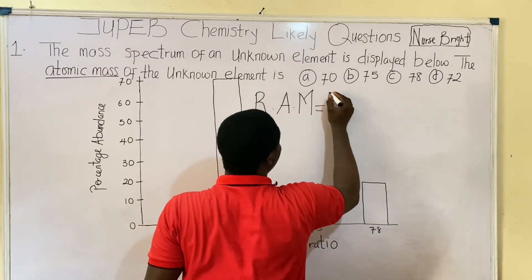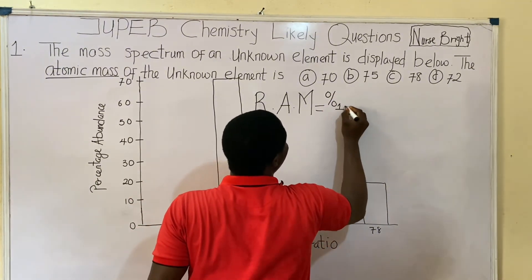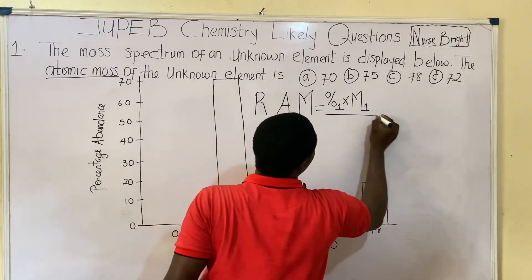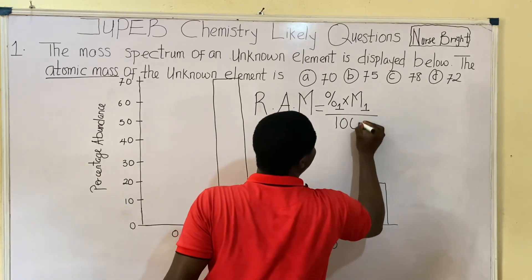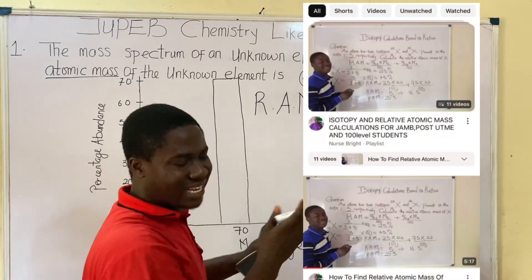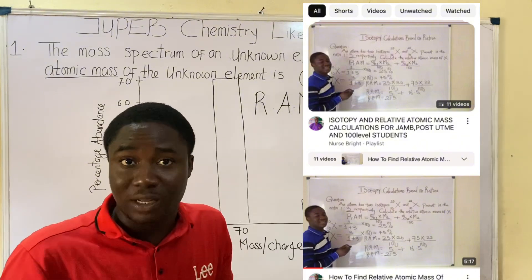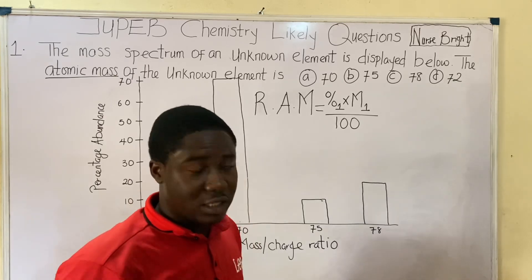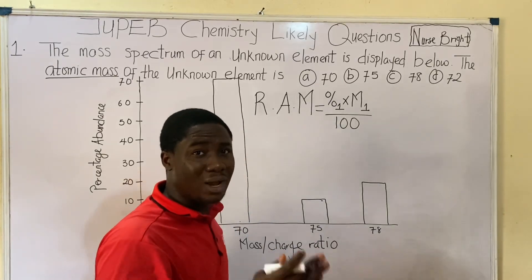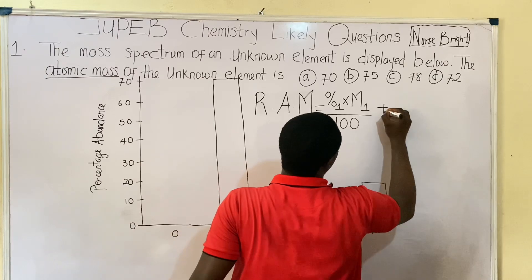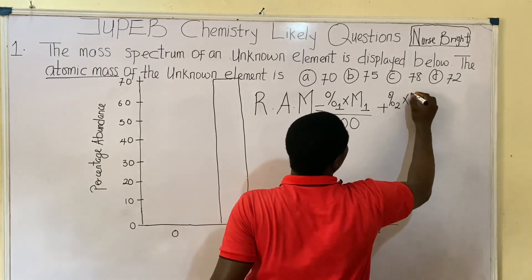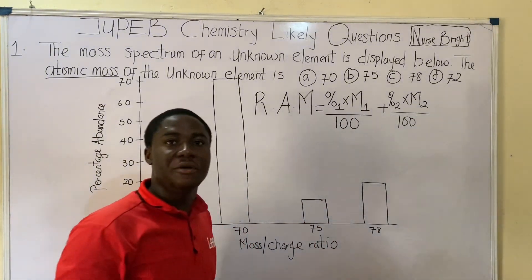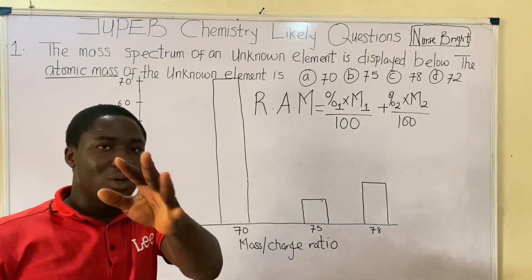For relative atomic mass, the formula is: (percentage 1 × mass number 1) / 100 + (percentage 2 × mass number 2) / 100. I have video lessons that explain isotopy and relative atomic mass — the link will be in the description section. This formula is very, very important. Let's move further.